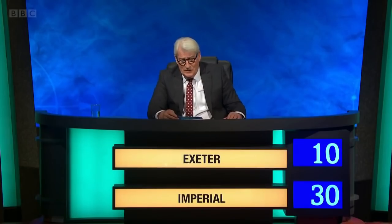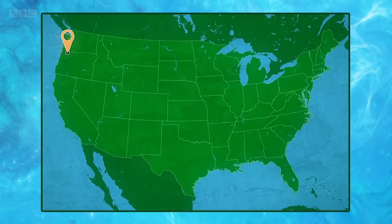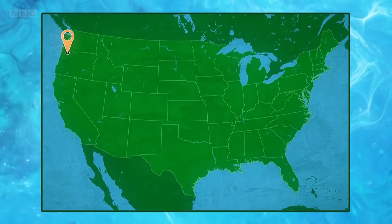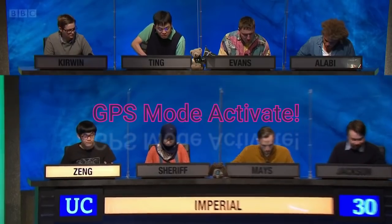We're going to take a picture round. For your picture starter, you'll see a map of the contiguous United States. For ten points, name the city marked. The answer buzzed in: Portland. Portland is correct.